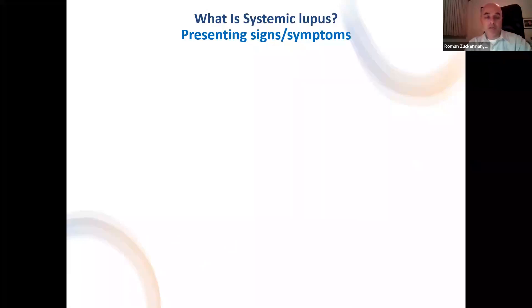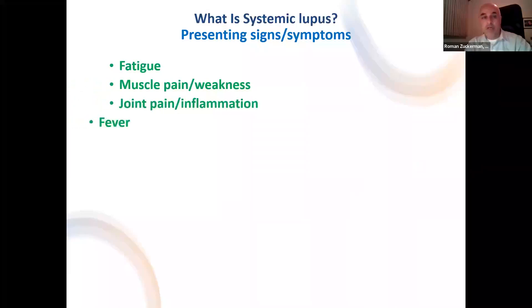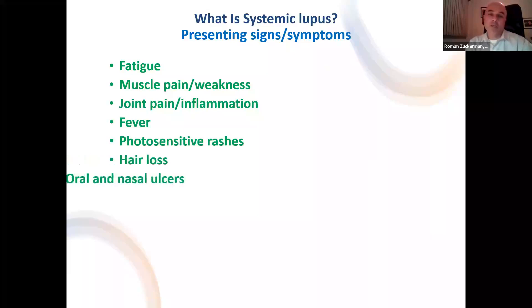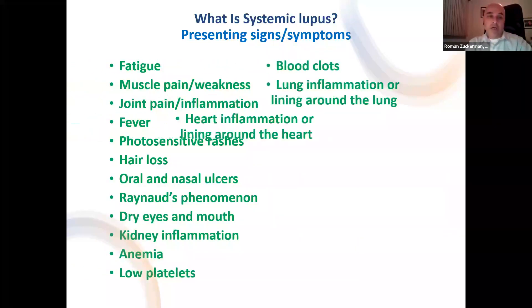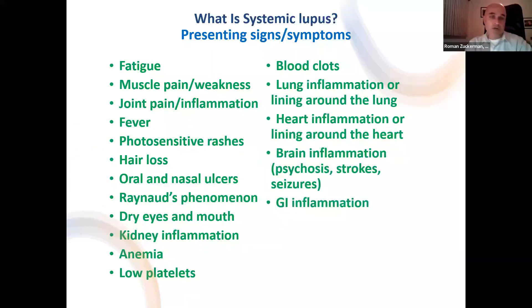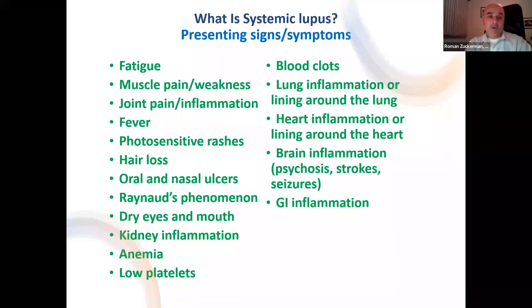Let's talk about some of the presenting signs and symptoms. The list is quite extensive, which goes back to the fact that this condition can affect virtually every organ in the body. Symptoms vary from fatigue, muscle pain, muscle weakness, inflammatory arthritis with joint pain, stiffness, fevers. Patients develop rashes — especially triggered by sun and ultraviolet exposure — hair loss, oral ulcers, ulcers in the nose, and Raynaud's phenomenon.